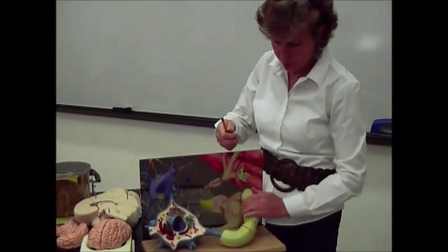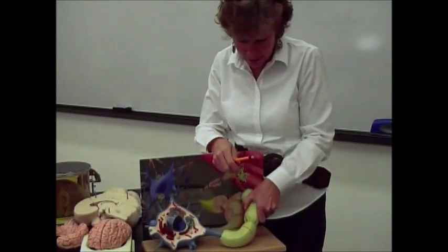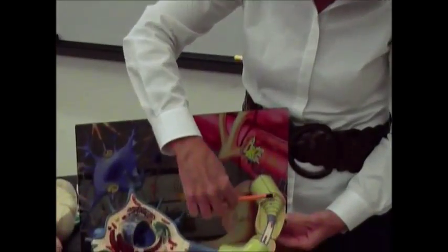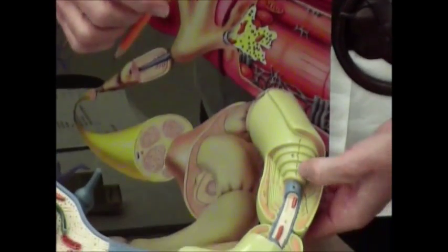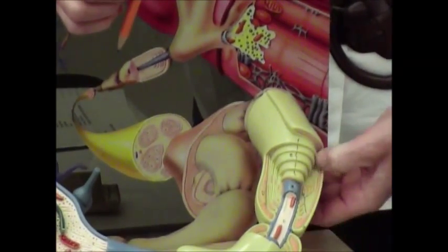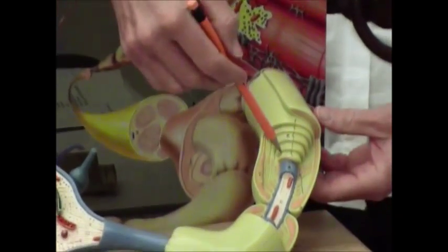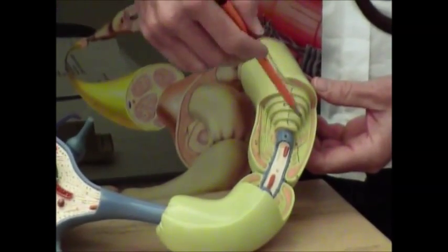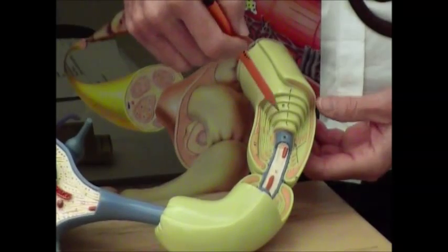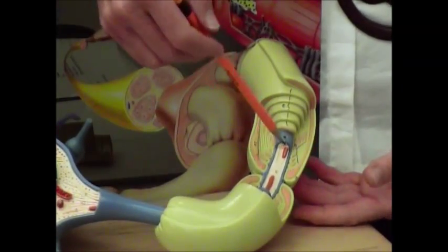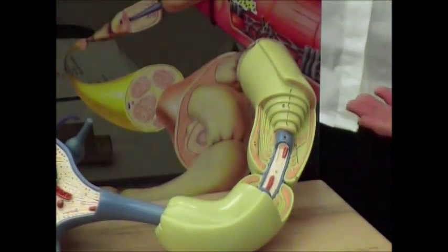But what happens is that Schwann cell will kind of flatten out its membrane, and then it'll come in here and it'll start wrapping around this axon. So if you take this off and you look at it, you can actually see where the fibers have wrapped around this axon. This is what you would refer to as your myelin sheath. That's that lipoprotein sheath that insulates the axon and helps the action potential go quicker down the axon.